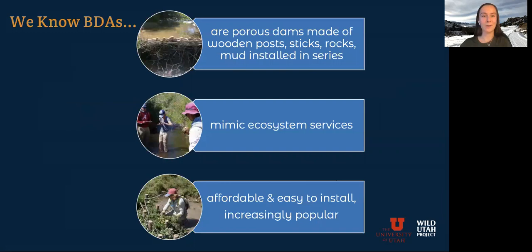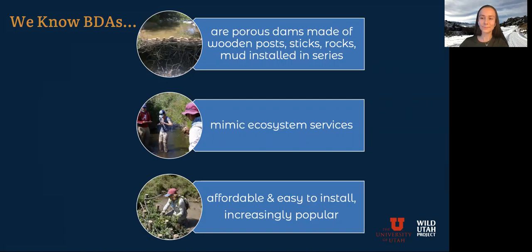Diving into beaver dam analogs, we know that they are porous dams made of wooden posts, sticks, rocks, and mud installed in series. Those series can be as small as maybe three dams, and they can be up to over 50 dams, just depending on the restoration site. We know that beaver dams mimic ecosystem services. They have been shown to create more fish habitat — in one study they increased the population of steelhead trout at a site in Oregon. They have been shown to increase riparian vegetation, and to prevent erosion and even encourage sediment aggradation, raising the bed of the stream. We also know that BDAs are affordable and easy to install, and for these reasons they're increasingly popular.